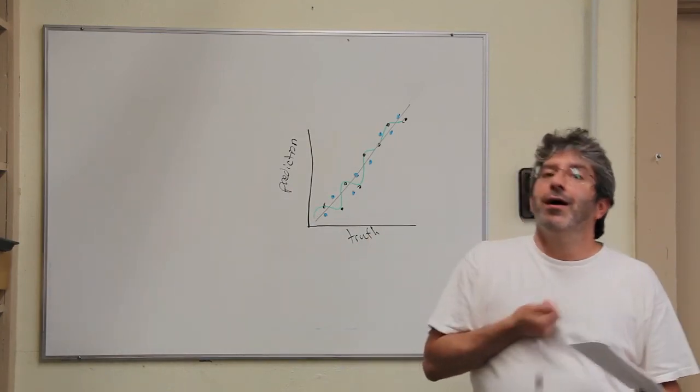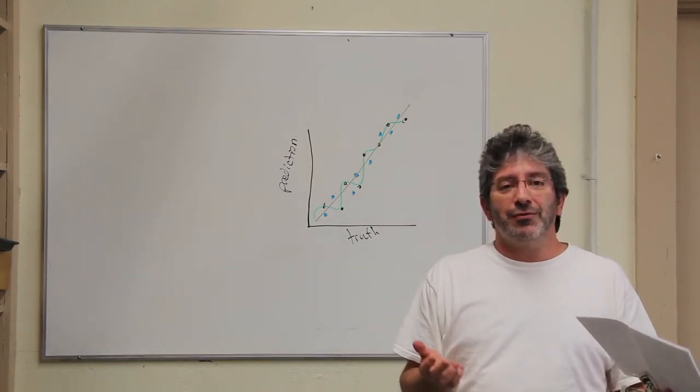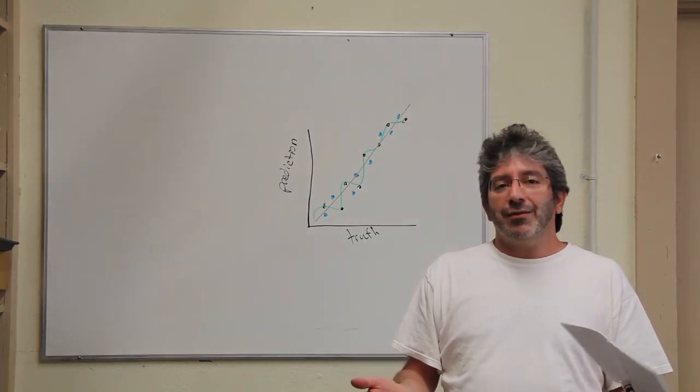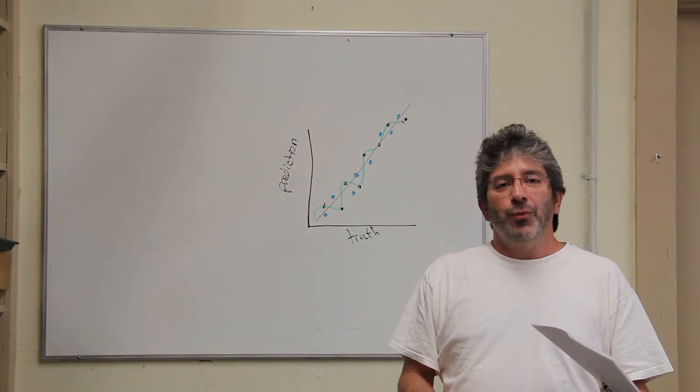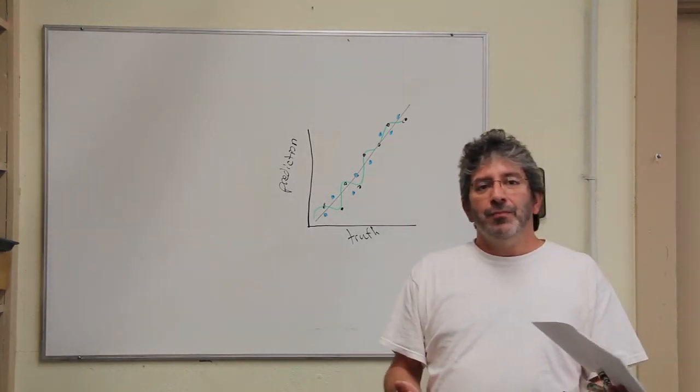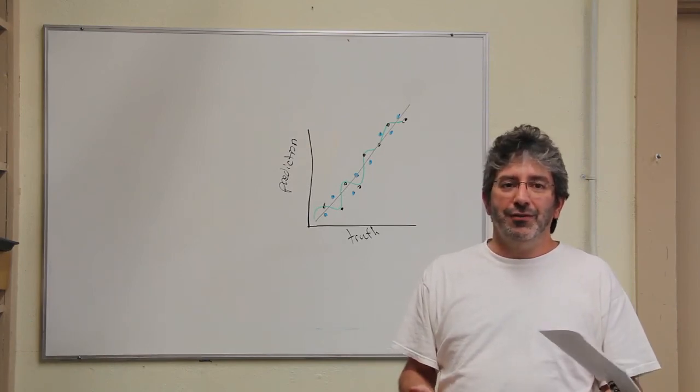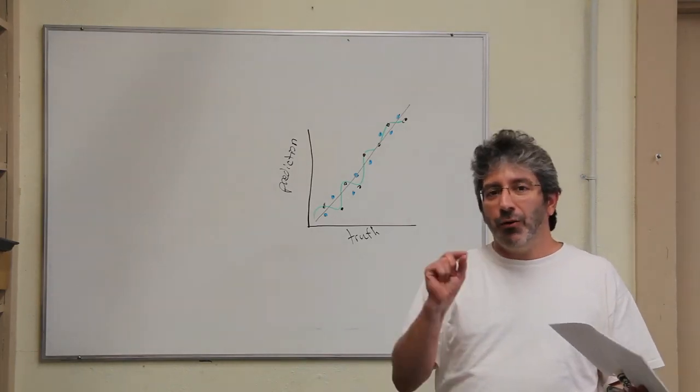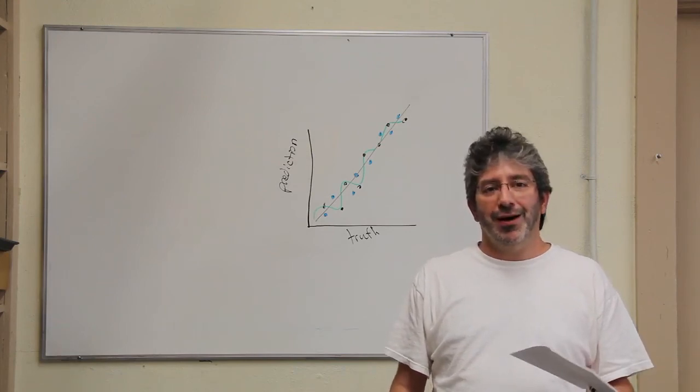If we were flipping coins, we're expecting a 50% probability of success. Well, maybe I can predict heads versus tails in a coin flip with 51% accuracy. Now, if I do a lot of coin flips, that's going to be statistically significant, but do I want to base strong inferences on a 1% improvement in predictive accuracy? Probably not.